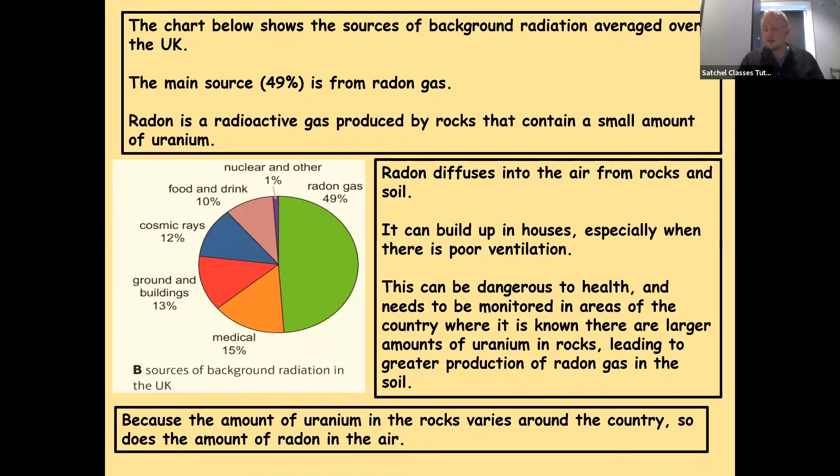Because the amount of uranium in rocks varies around the country, so does the amount of radon in the air in different places within the UK. Basically, geologically, the structure of the UK is not the same rock from top to bottom. So depending on where you live, the rocks present in the ground underneath you can make a big difference to the amount of radon that's diffused into the atmosphere.